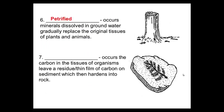Number six: petrified, or petrification. Occurs when minerals dissolved in groundwater gradually replace the original tissues of a plant or animal. So if you find petrified wood, it looks like a log but it's solid rock, as those minerals get in and replace the wood. And finally, carbonaceous film. Occurs when the carbon in the tissue of an organism leaves a residue or thin film of carbon on sediment that then hardens — almost like a carbon copy.